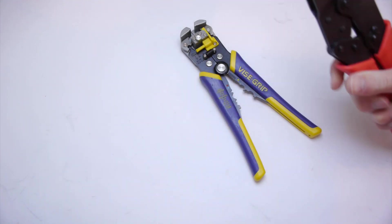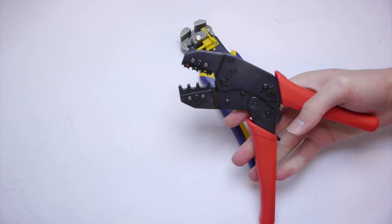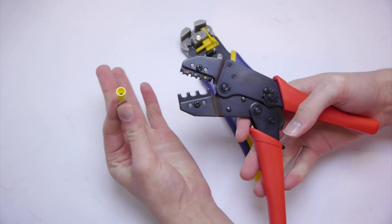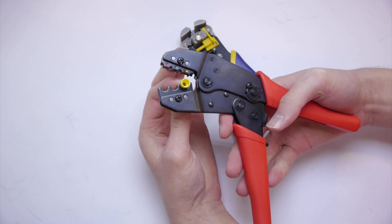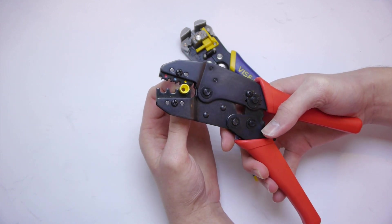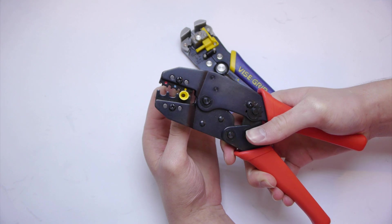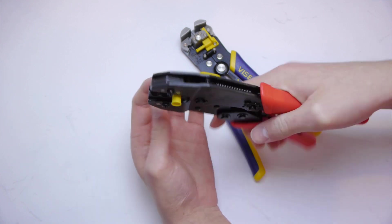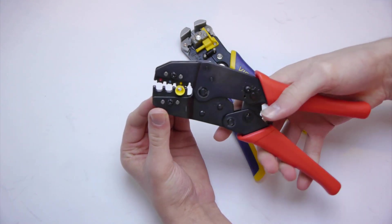Now to actually crimp our connector, we take the crimpers, put the part inside like this, and crimp down just enough for it to be held in there, so you can see it's being held in there like that.